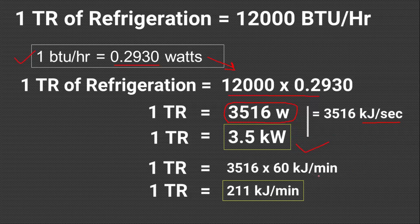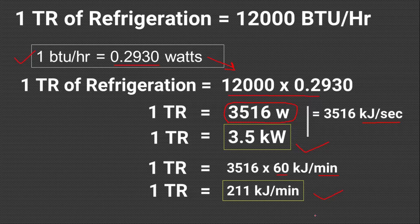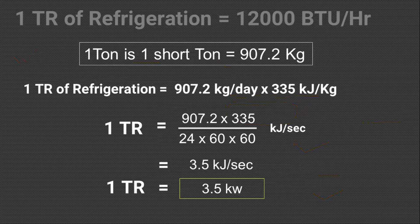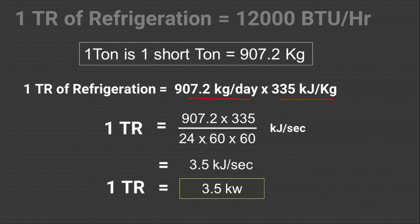To convert Kilowatts into KJ per minute, we multiply by 60, so 1TR is equal to 211 KJ per minute. Always remember, 1TR comes from 2,000 pounds or 907.2 kg of ice — it is not coming from 1,000 kg of ice. In this calculation, 1TR is 907.2 kg of ice per day multiplied by the latent heat of ice, which is 335 KJ per kg, and by calculating it we get 3.5 Kilowatts as 1TR. If by mistake you take 1,000 kg, the value becomes 3.8 Kilowatts, which is wrong. So don't confuse the units.